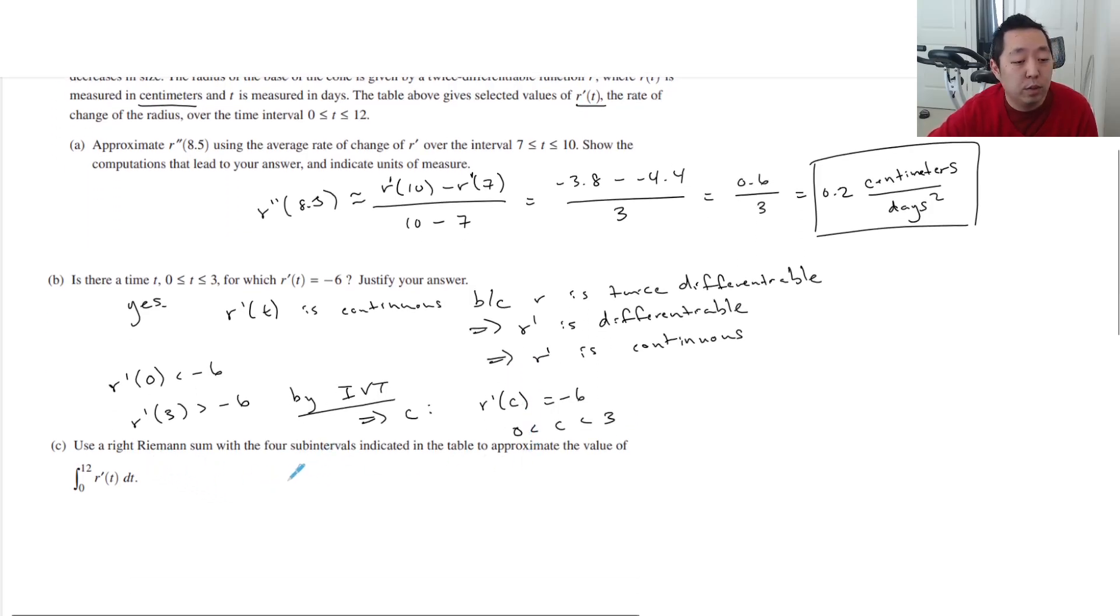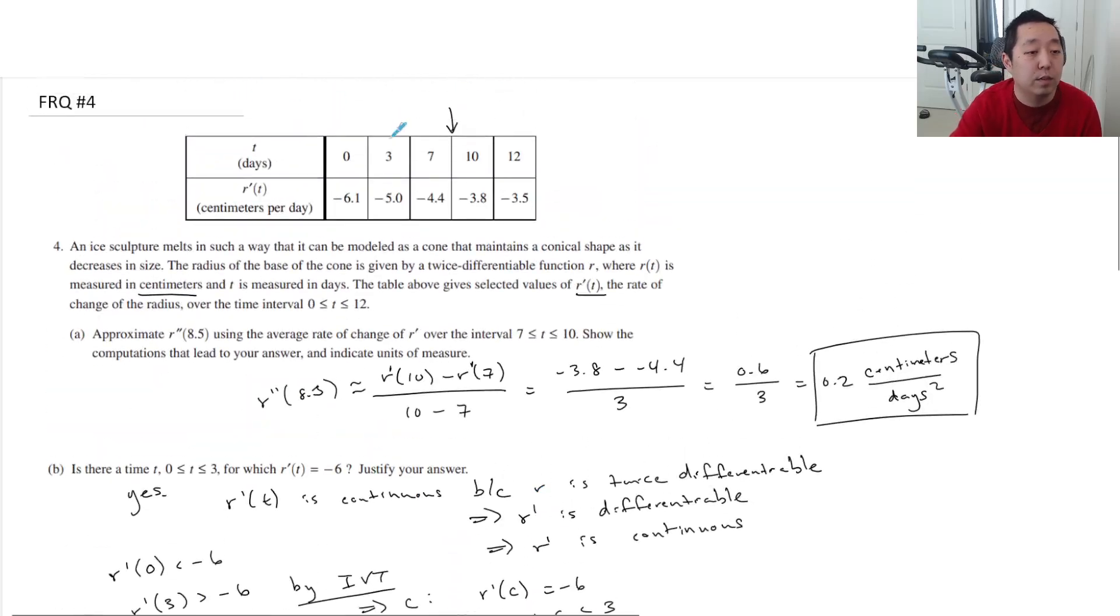Use a right Riemann sum with four subintervals indicated by the table to approximate the value. So right Riemann sum, four intervals. My intervals are 3 is the width, 4 is the width, 3 is the width, 2 is the width. And to do a right sum, I'm always going to pick the right sum. So it's going to be 3 times the right value of -5, plus 4 times the right value of -4.4, plus 3 times the right value, which is -3.5.